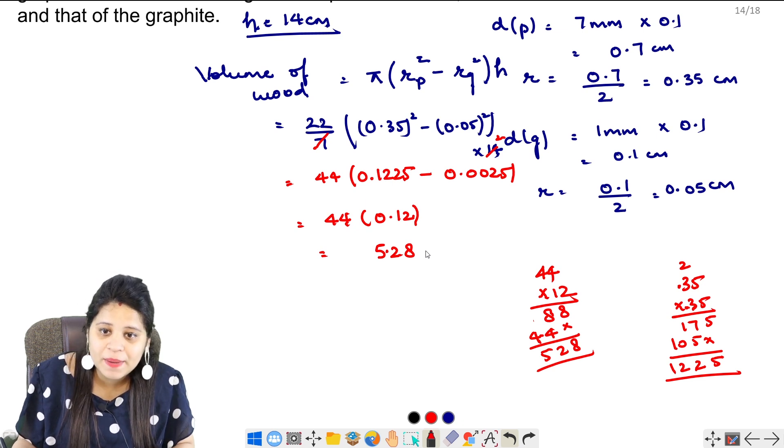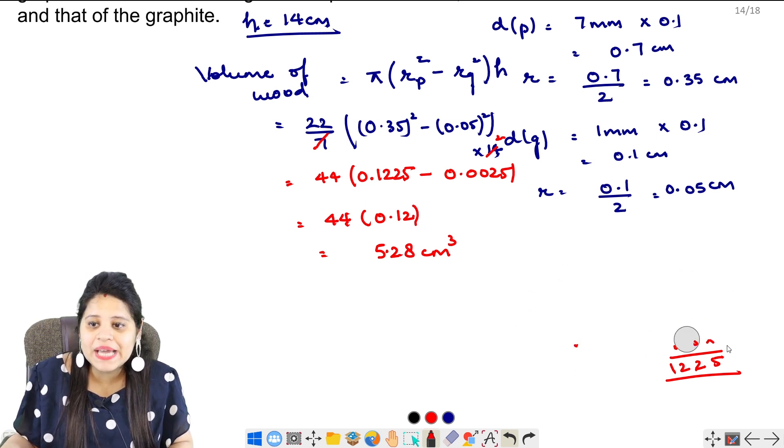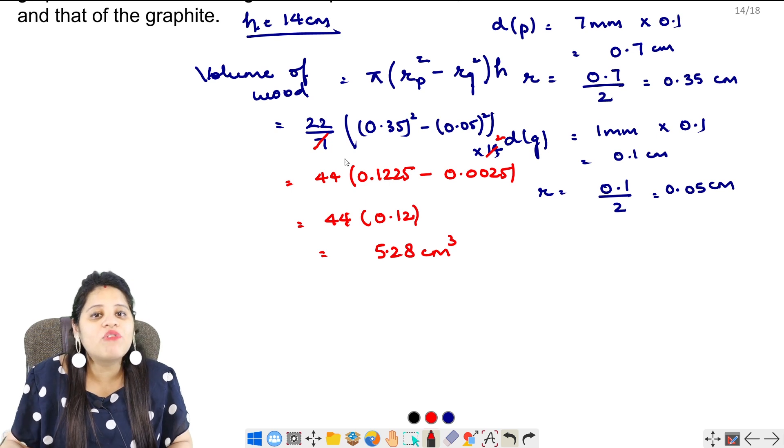But 2 digits before the decimal means 5.28. And if we have taken volume, this will be our centimeter cube. Clear? Now we have to remove it. This is our volume of wood.